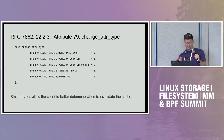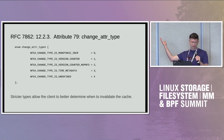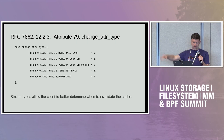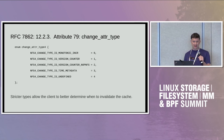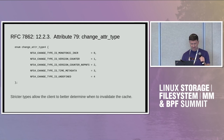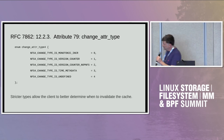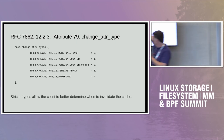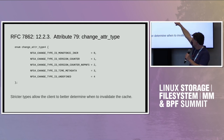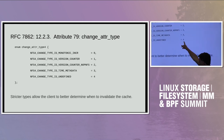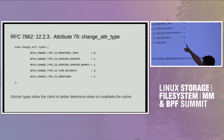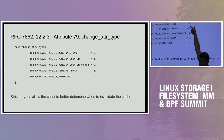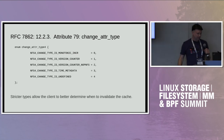NFS V4.2 also gave us a way for the server to report what type of change attribute it has, so the client can decide how to treat it. The time metadata type is particularly useful. Right now we pretty much always report it as undefined; what we'd like to do is report it as monotonic.